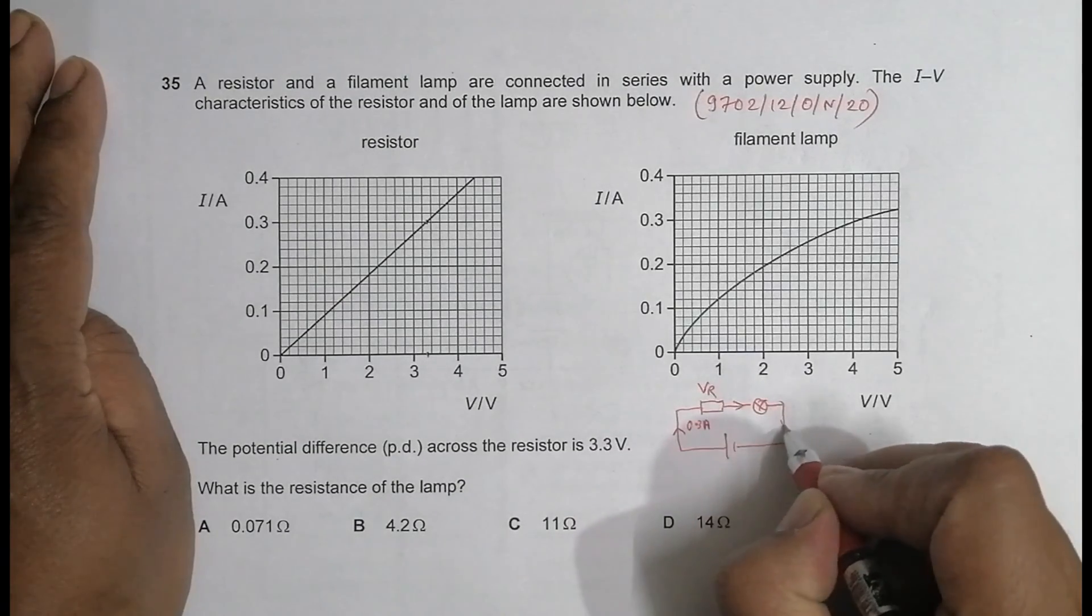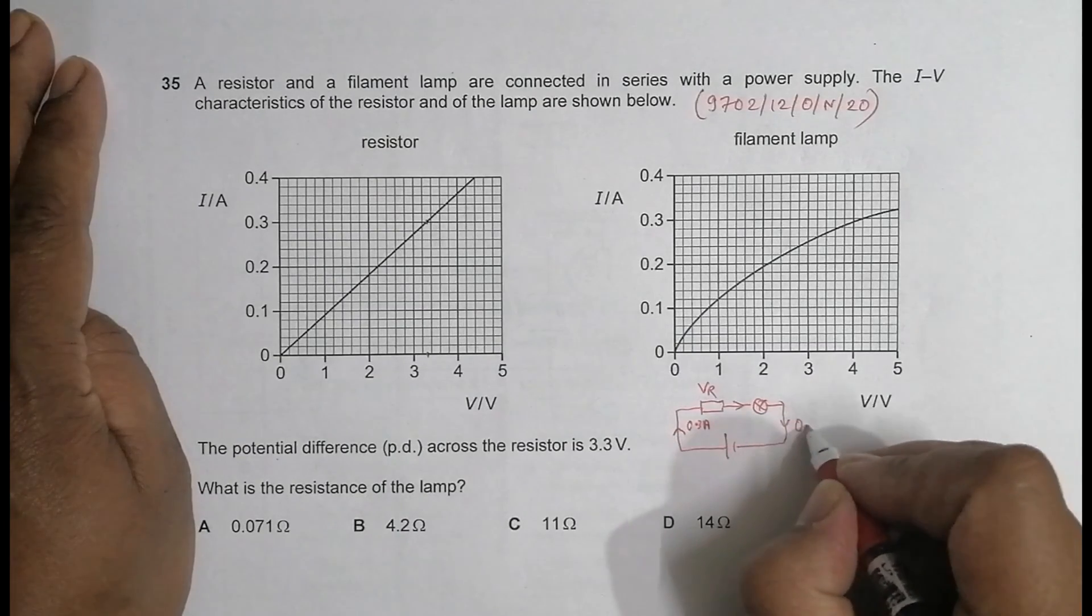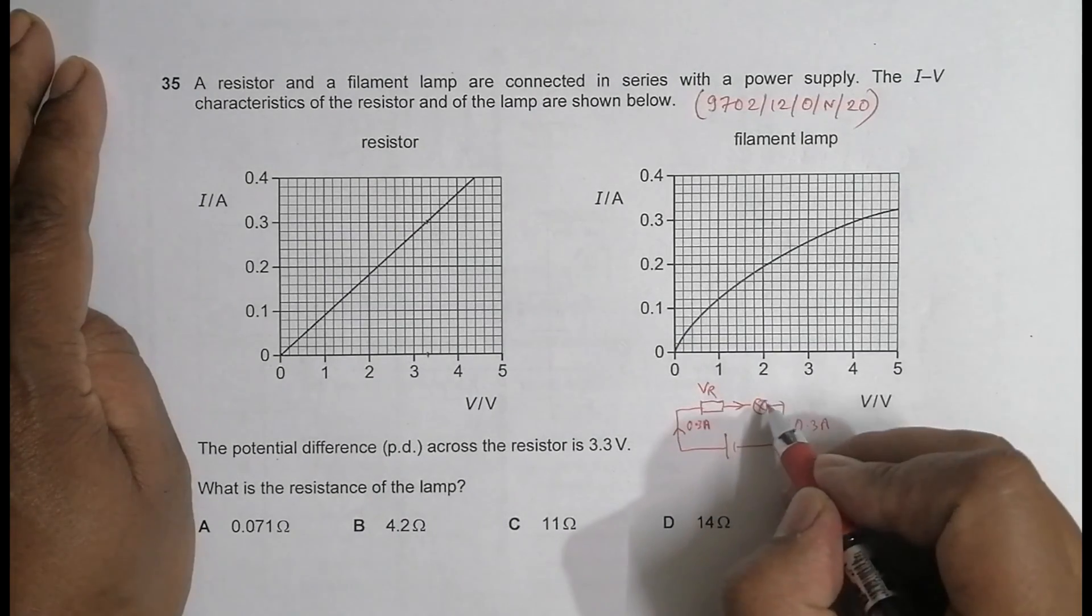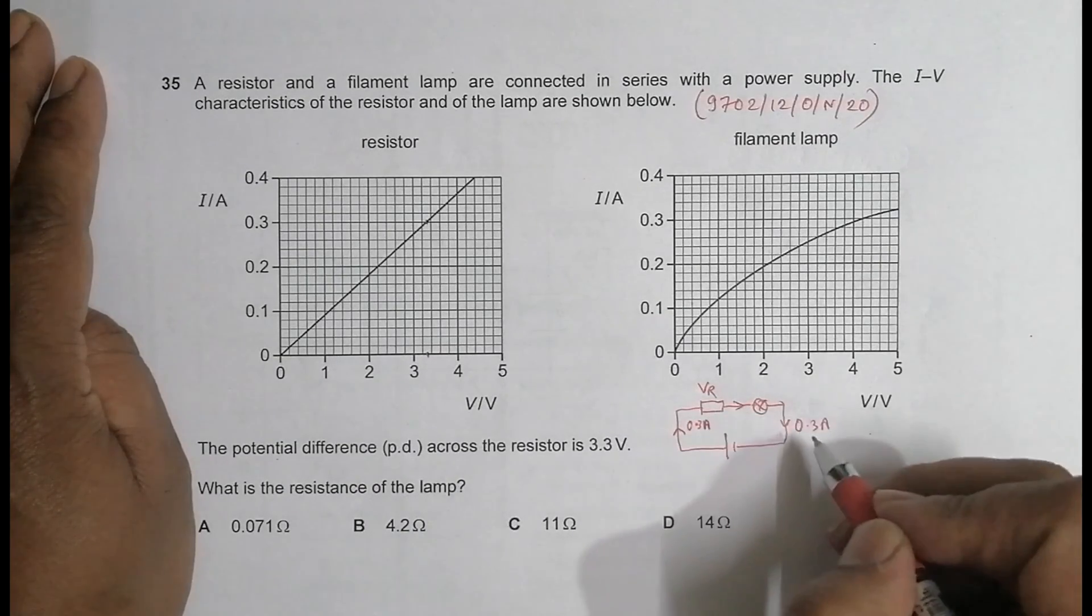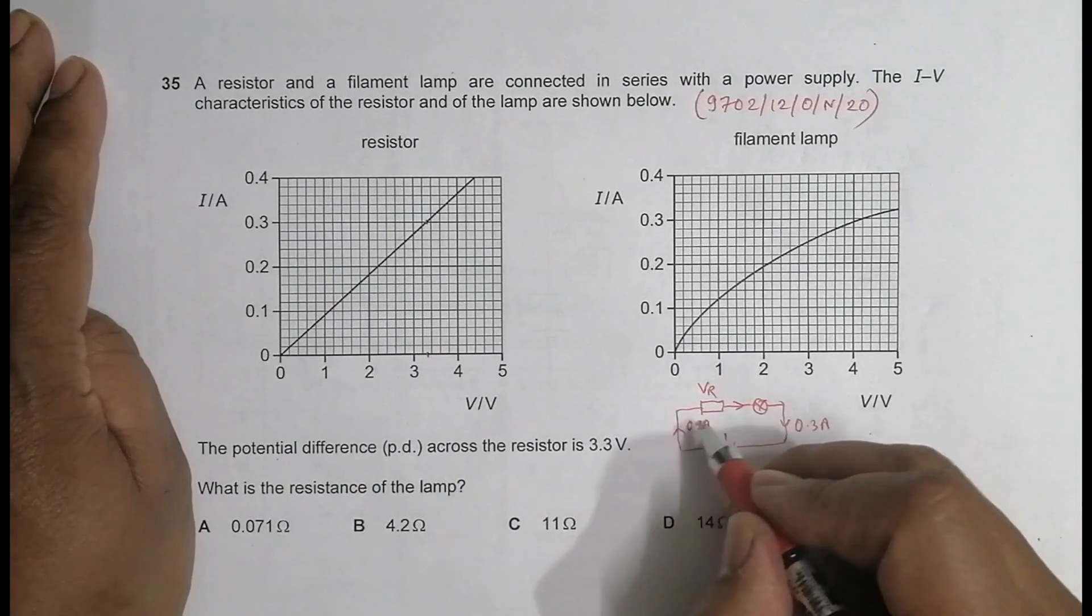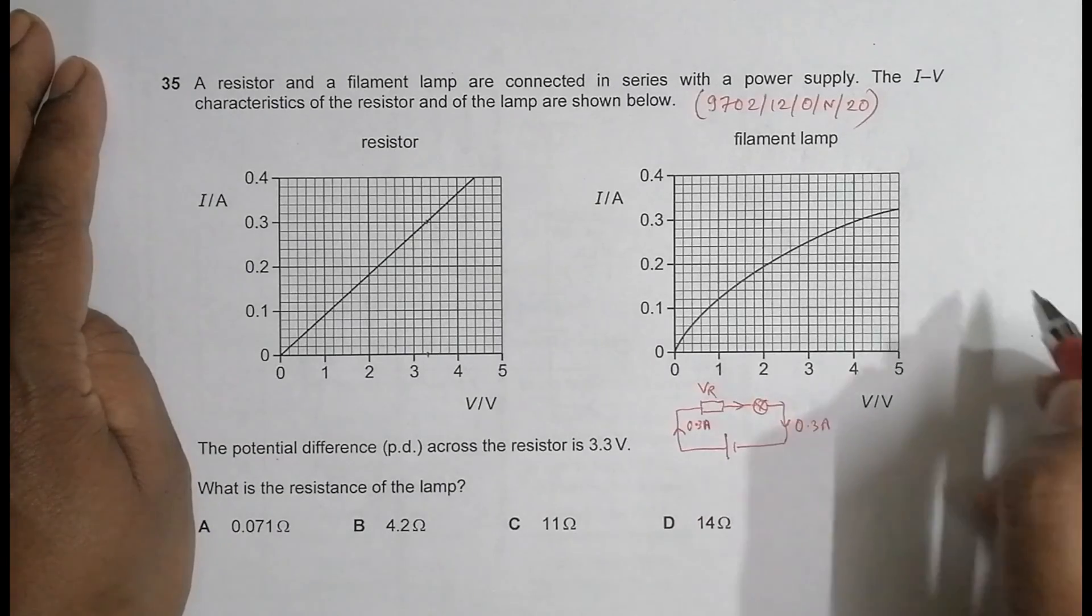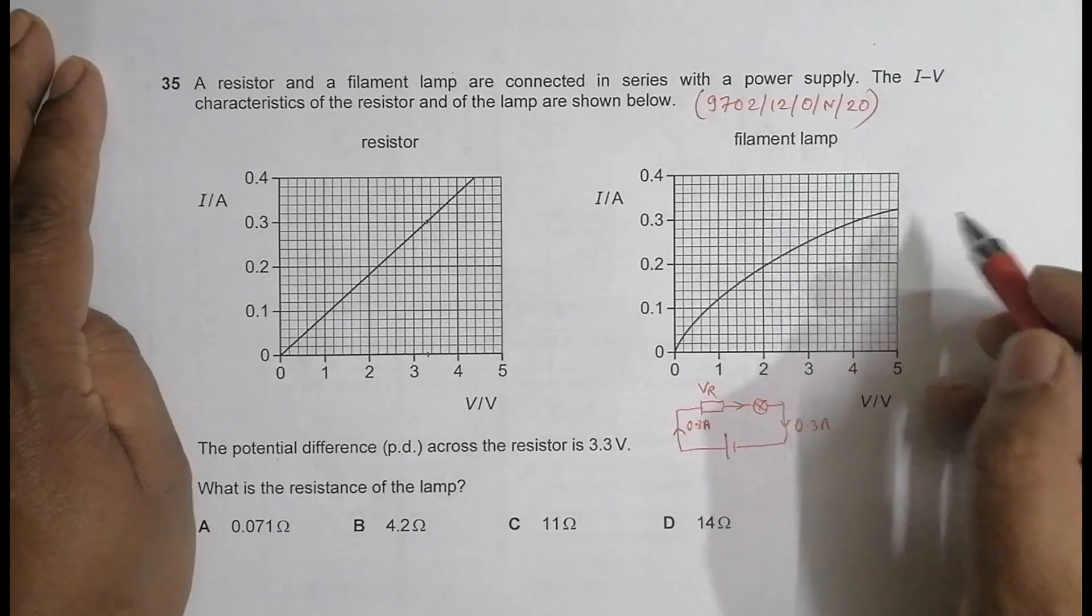Now since it is in series, here also it is 0.3 ampere and here also it is 0.3 ampere. That means the current through the filament lamp is also 0.3 ampere, because in series the current through all the components is the same.